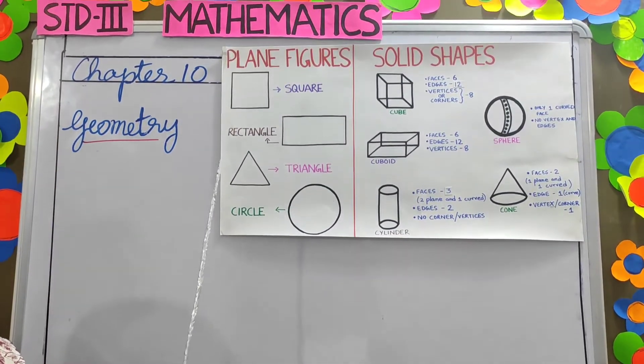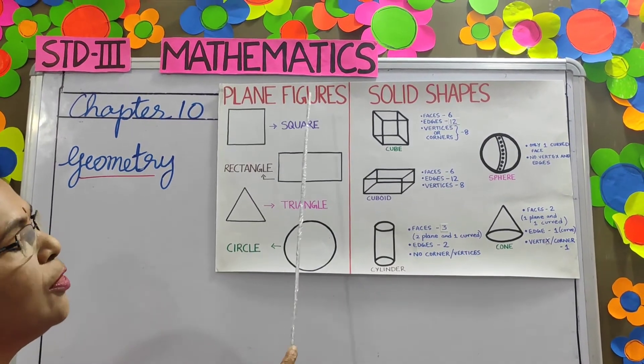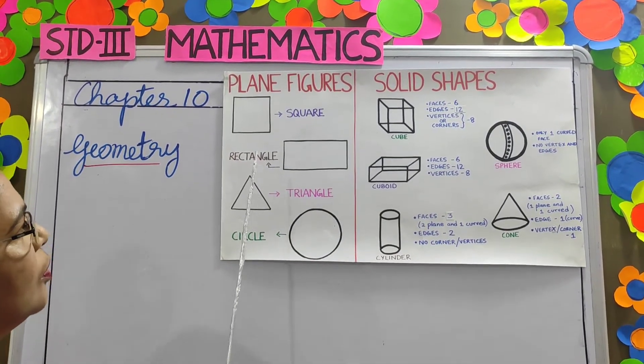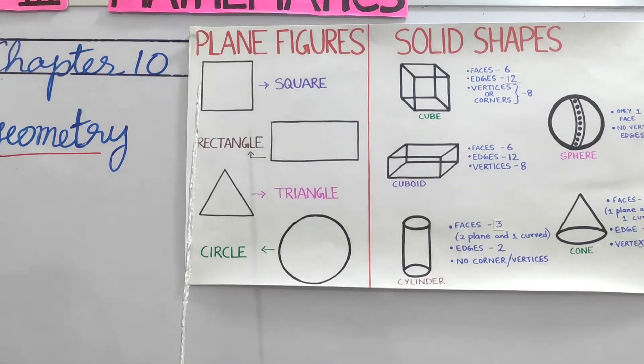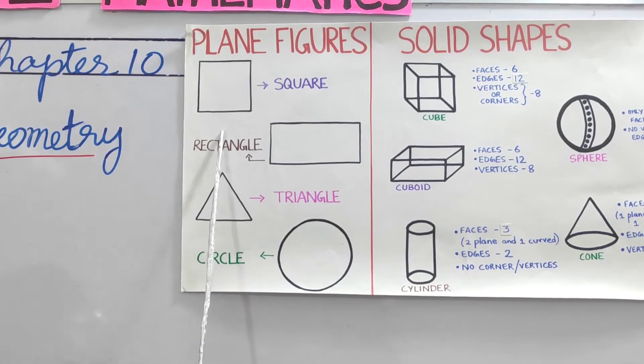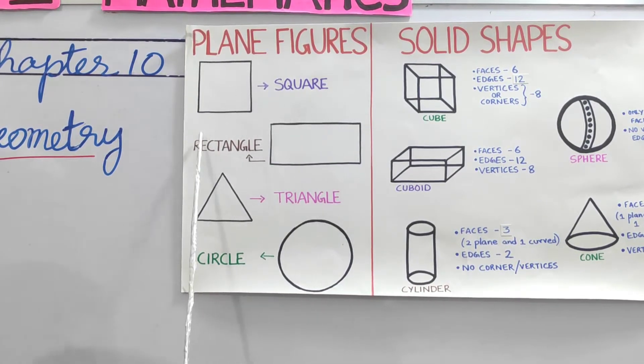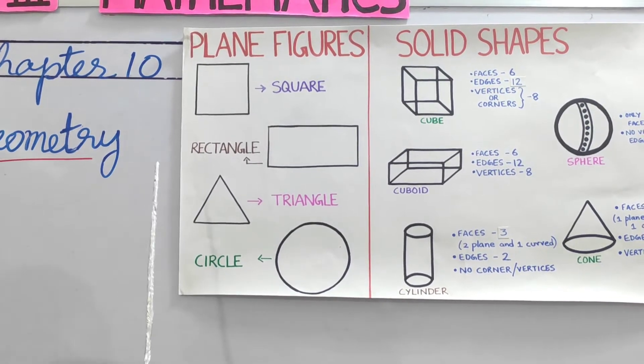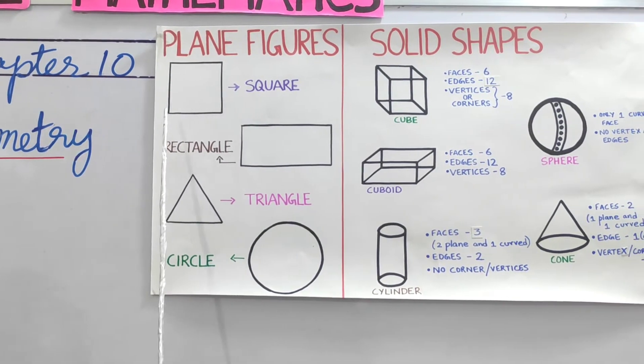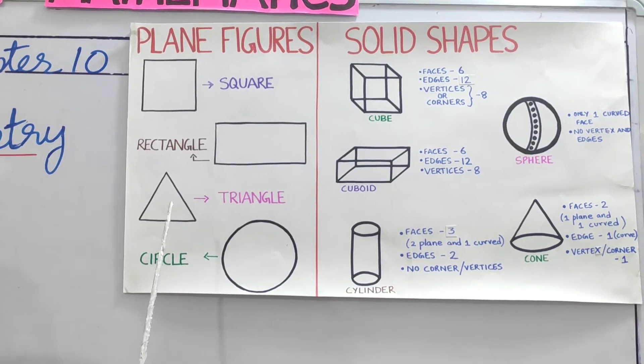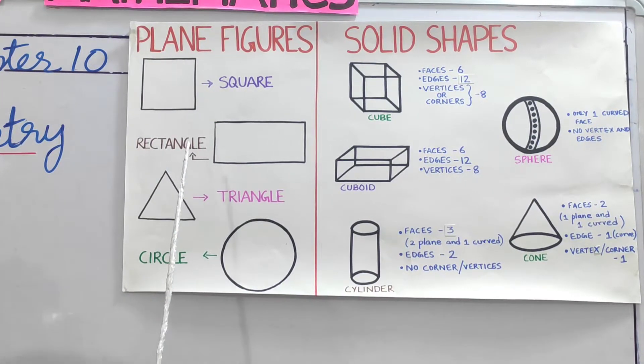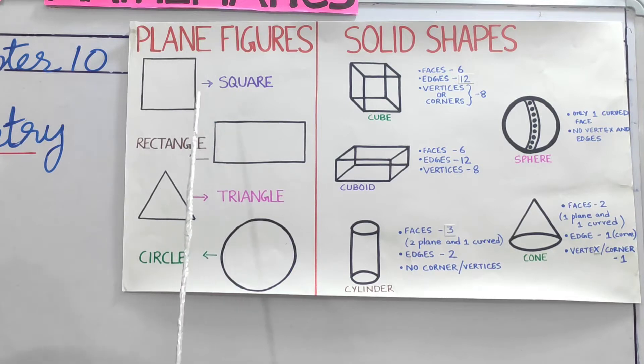Look at the chart here. Plane figures. Which is the first figure here children? It is a square. A square has four equal sides and four corners. The corners are also called vertices.